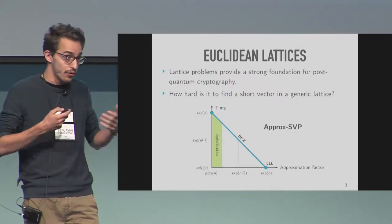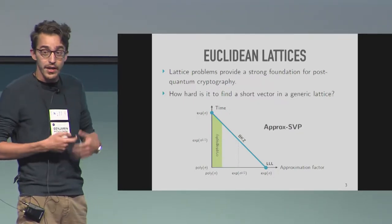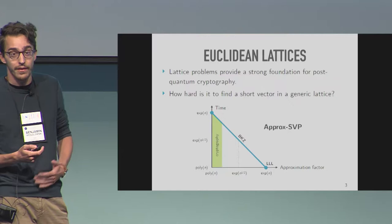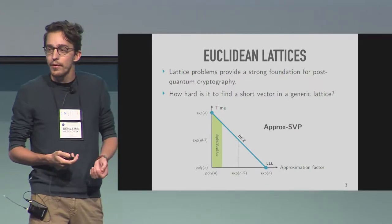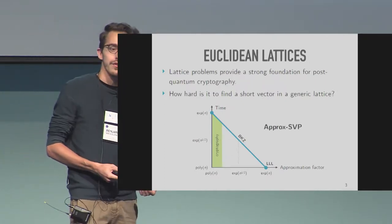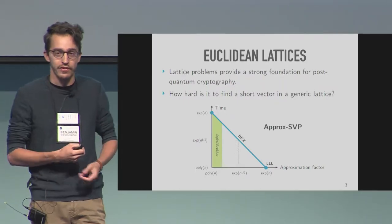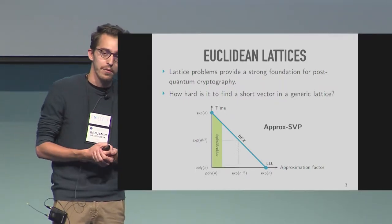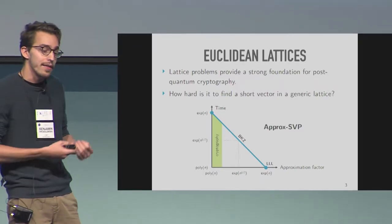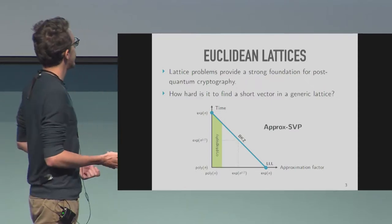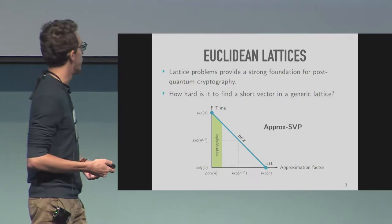If you're interested in finding the shortest vectors of your lattice, you can do it thanks to the algorithm BKZ, but it will take exponential time in the dimension of the lattice. You can make the problem simpler by asking not for the shortest vectors but some approximate shortest vectors — shortest up to some approximation factor. When the approximation factor is large, the problem becomes simpler. If you're interested in approximation factors that are exponential in the dimension, you can do this in polynomial time thanks to the algorithm LLL.